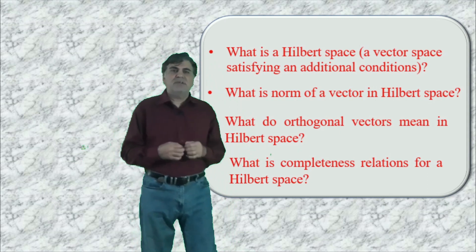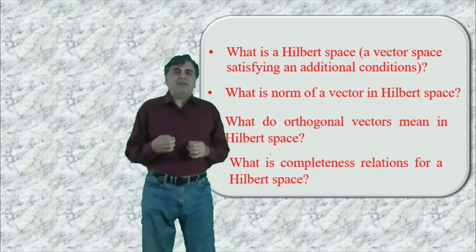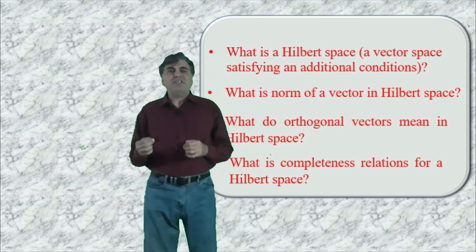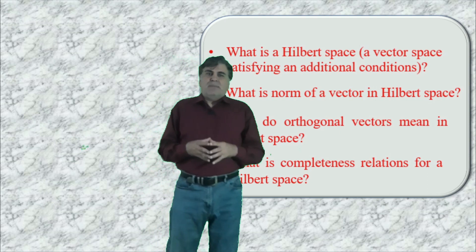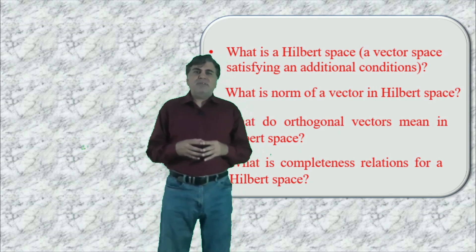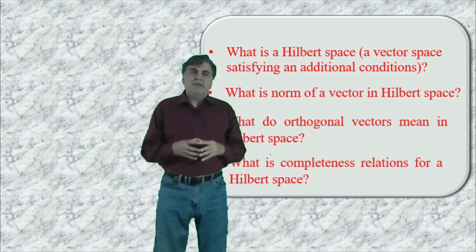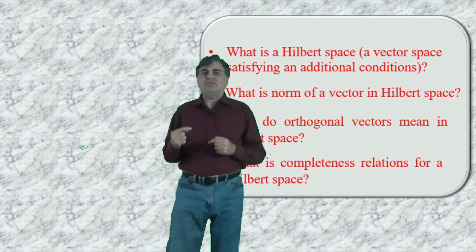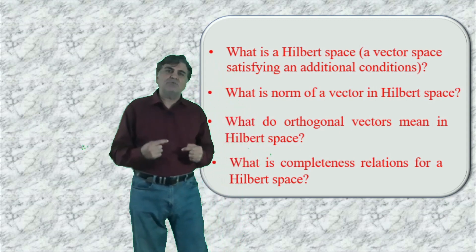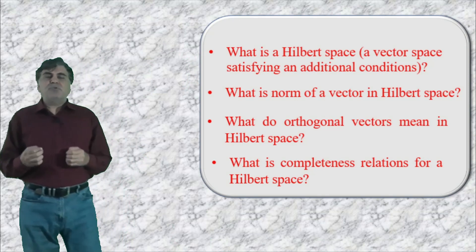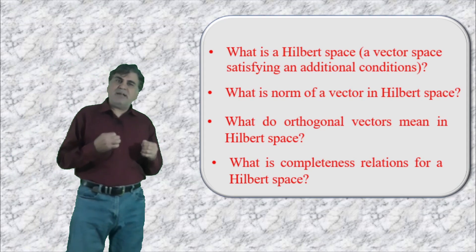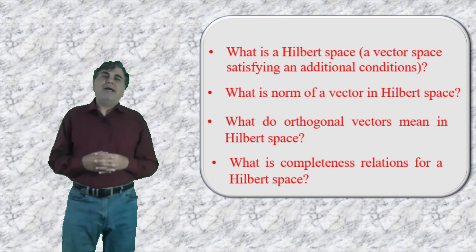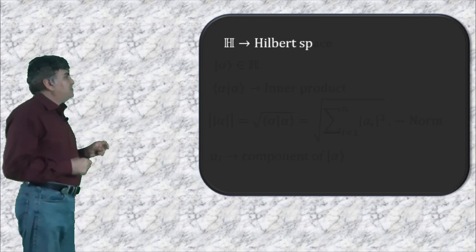In order to completely understand the concept of Hilbert space we must clarify a few more concepts related to some physical quantities of practical importance. Mathematically, a Hilbert space is an inner product vector space over the set of complex numbers which is complete under the operation of the norm defined through the inner product. Let H be a Hilbert space and alpha a vector residing in it.